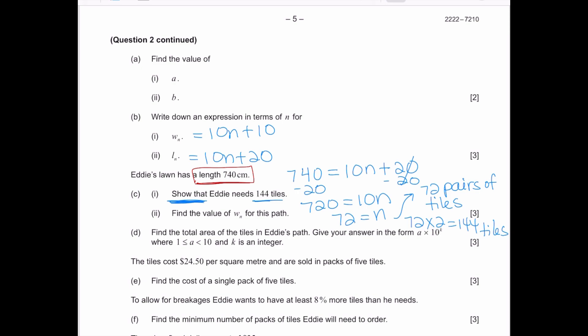Now in part 2, it says find the value of Wn for this path. Well, that's easy because we know the formula from what we already found is going to be 10 times n, and in this case I know that n is going to be 72 plus 10, which is 720 plus 10. So the answer is 730.